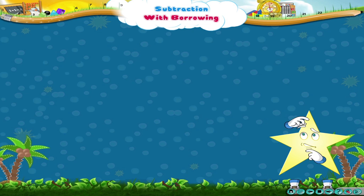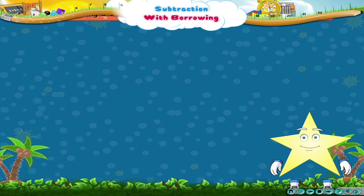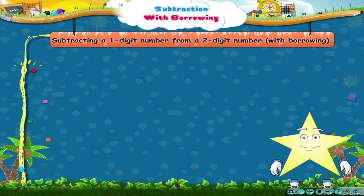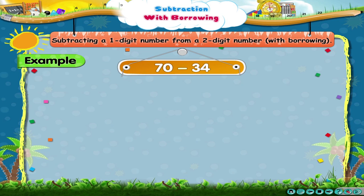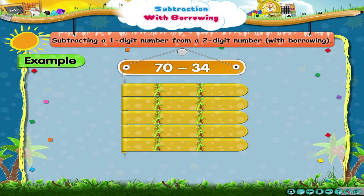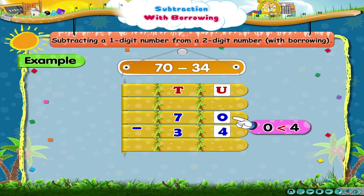Have you followed, Starry? Good. Let us try this. 70 minus 34. Observe the units place. 0 is smaller than 4. So, from 0, we cannot subtract 4.